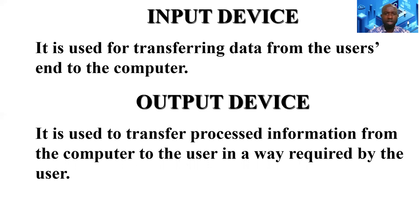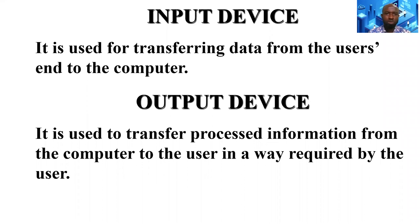Another important device is the output device. It is used to transfer processed information from the computer to the user in a way required by the user. For example, if the user wants to see it visually, they will use an output device like a projector or a monitor. If the user wants a hard copy, they will use a printer.